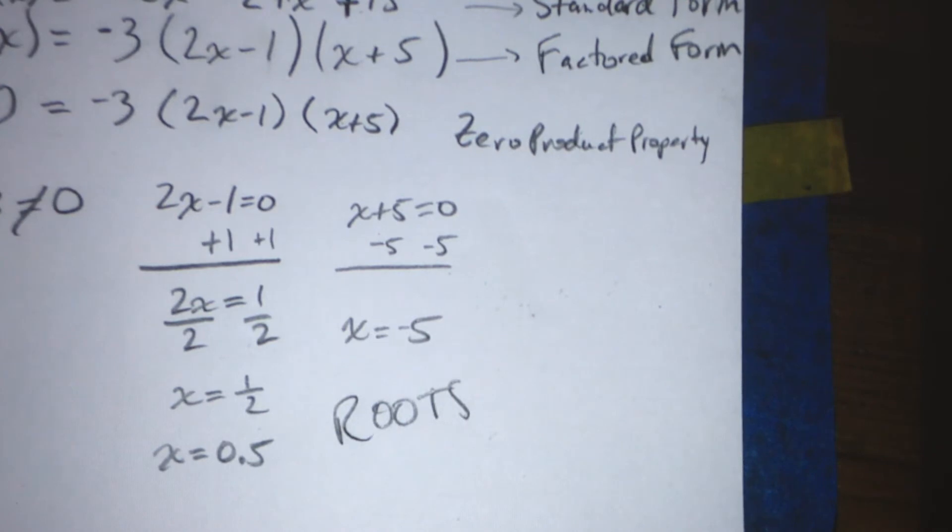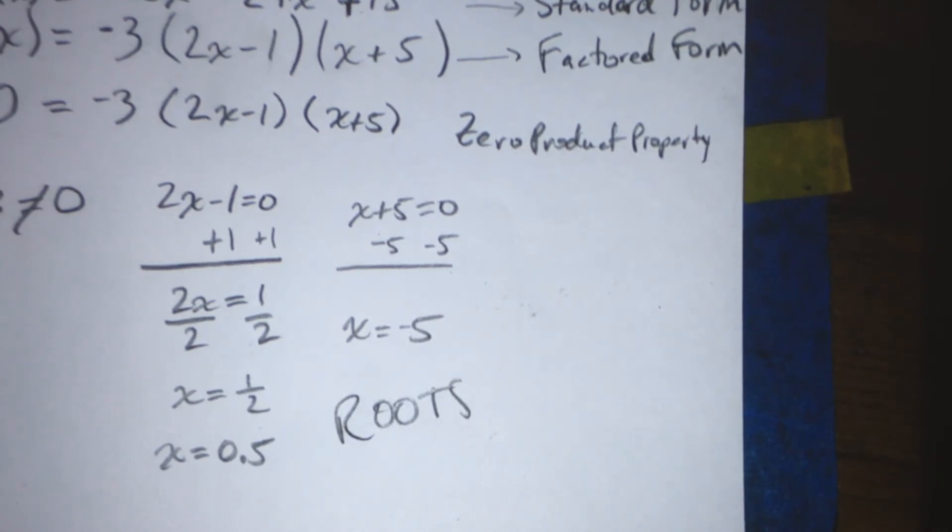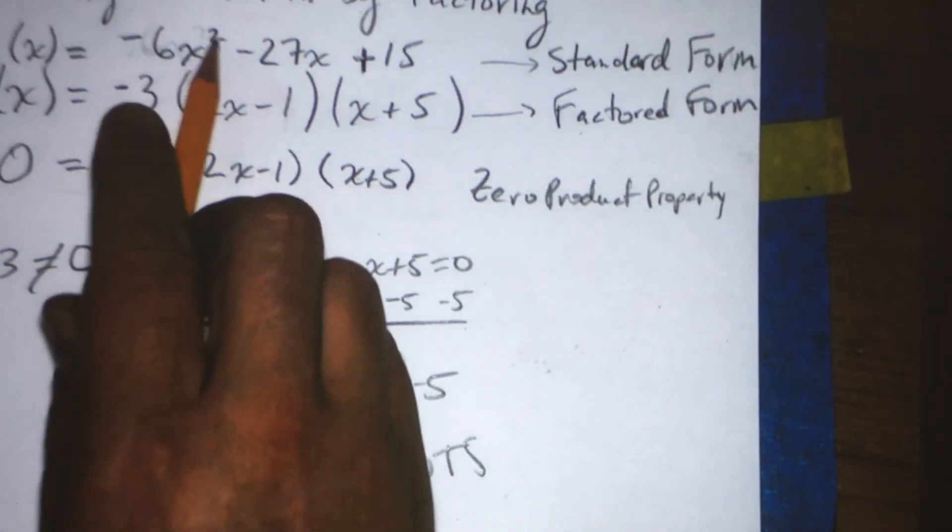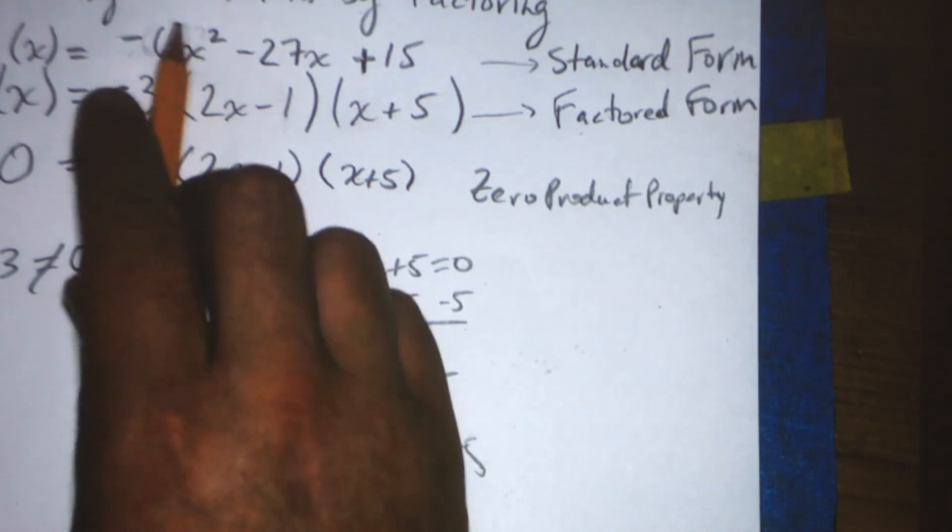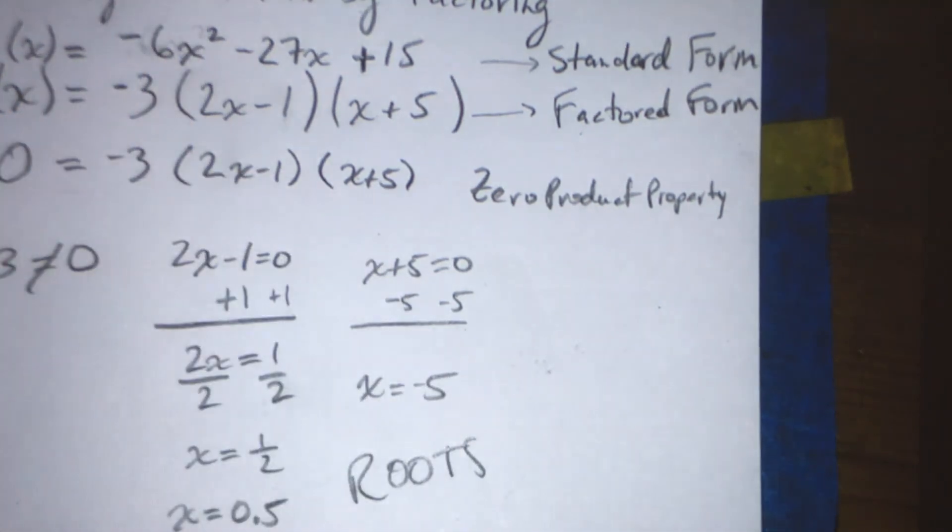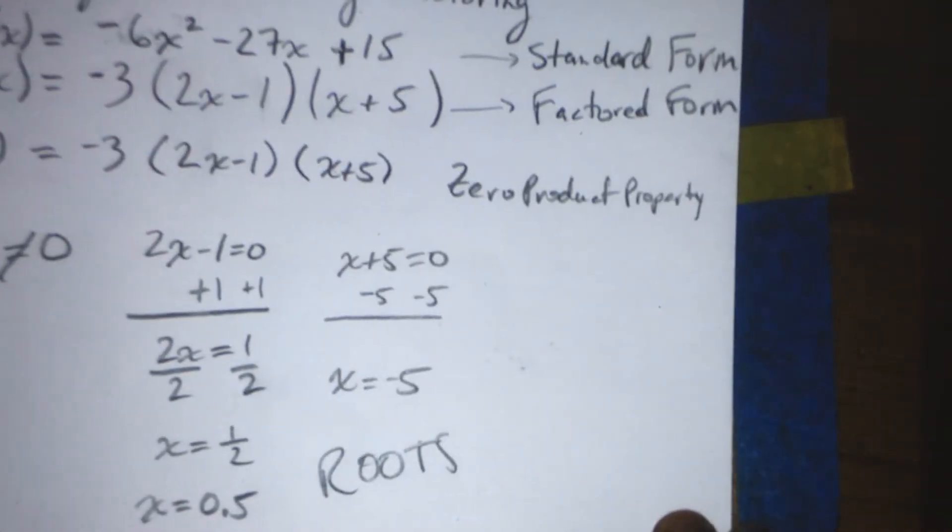Now, if we want to think about what this would look like as a sketch, we should start out with our original function, negative 6x squared minus 27x plus 15. And say, well, we can see that because the a value is negative, then this is a quadratic that opens downward.